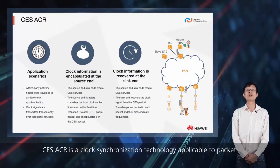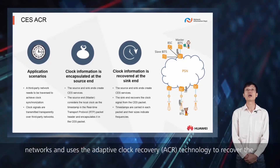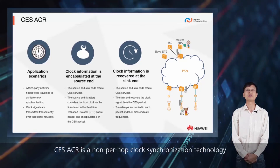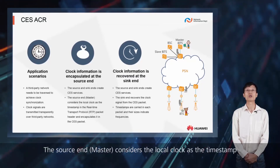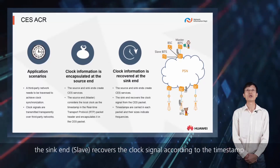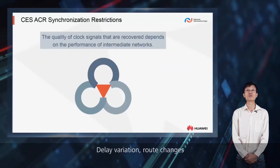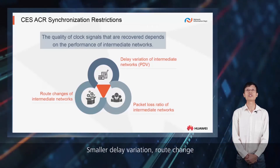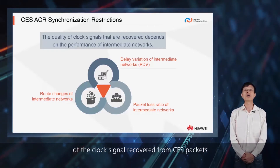CES-ACR is a clock synchronization technology applicable to packet networks and uses the adaptive clock recovery (ACR) technology to recover the clock synchronization information transmitted by CES services. CES-ACR is a non-per-hop clock synchronization technology. The source end (master) considers the local clock as the timestamp in the RTP packet header and encapsulates it in the CES packet. The sync end (slave) recovers the clock signal according to the timestamp in the packet and traces the clock signal. Delay variation, route changes, and packet loss of intermediate networks affect the quality of the clock signal recovered from CES packets. Smaller delay variation, route change, and packet loss ratio indicate better quality of the recovered clock signal.